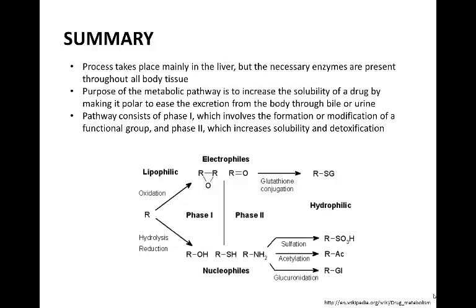In summary, drug metabolism is a liver-centric process, and the overarching purpose is to make a substance more water-soluble to excrete from the body, generally through bile or urine. This is completed by making the molecule more polar through adding or modifying functional groups, or conjugating the drug with endogenous substances. Though broken into two phases, different drugs have different properties, and some are more readily soluble than others, leading them to not need as many modifications for subsequent removal.